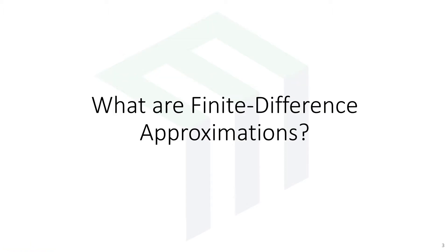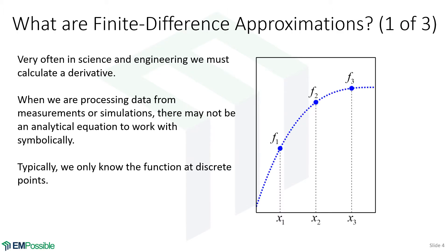What are finite difference approximations? Suppose we have a function, shown here as the dashed blue line. We won't actually know the function itself — this is just for illustration — but we know the function at discrete points: F1 at position X1, F2 at position X2, and F3 at position X3. So if we have a discrete function, what do we do if we want to know the value of its derivative at some point? This is what a finite difference is intended to do: to estimate derivatives with discrete data.